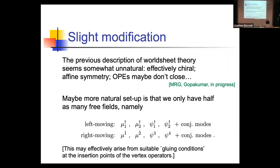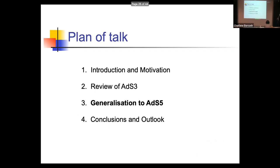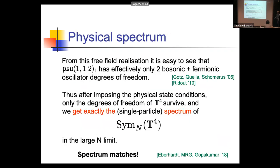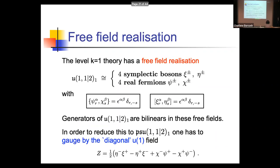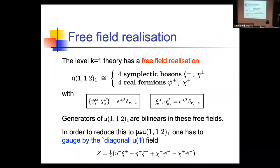Q&A: Is there any relation between these free fields and the Wakimoto representation? Response: There is — it's not entirely trivial, but you can write the Wakimoto fields in terms of these free fields at k=1, since you can express the currents in terms of these fields and then translate to Wakimoto. However, this only works at k=1 — you can reconstruct the Wakimoto fields from these free fields, but they are not exactly the same fields.